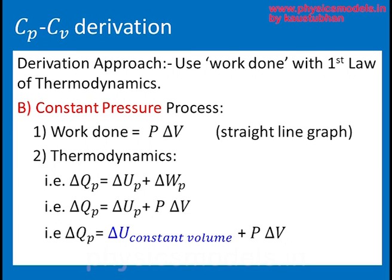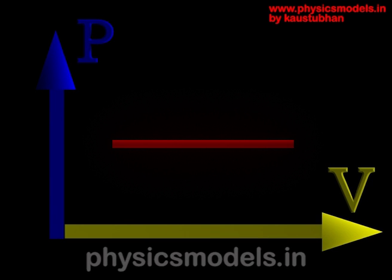And this work done, we plug it into the first law of thermodynamics for the constant pressure process. And then we can substitute the constant volume internal energy as you saw there. Now if you take a quick look at this graph, it's a straight line.